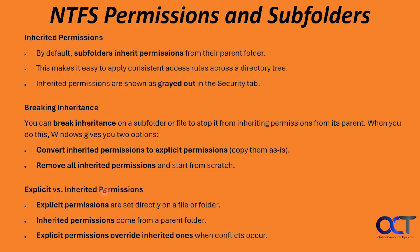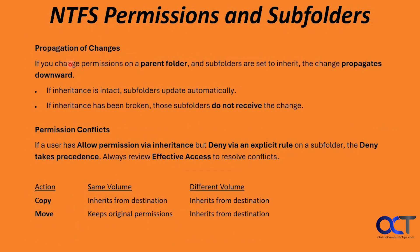Explicit permissions are set directly on a file or folder, while inherited permissions come from the parent folder by default. Explicit permissions override inherited ones when conflicts occur. If you change permissions on a parent folder and subfolders are set to inherit, that change propagates downward — so setting the main folder to read-only makes everything underneath read-only too. If inheritance is not disabled, subfolders automatically update to reflect the change. But if inheritance is broken on a subfolder, it does not receive the change.